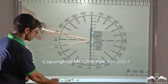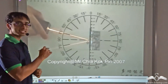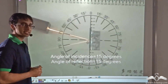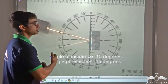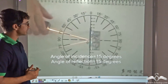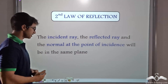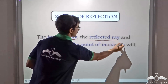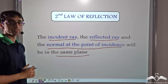Now consider this video once again. You will notice that the incident light, the reflected light and the normal at the point of incidence are all lying on the same plane — that is, they are lying on the same plane of paper that the protractor is on. This signifies that the incident ray, the reflected ray and the normal at the point of incidence lie on the same plane. This is the second law of reflection.